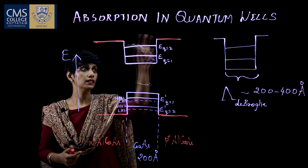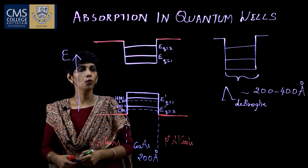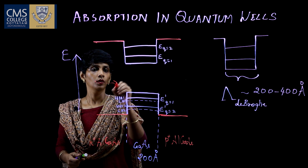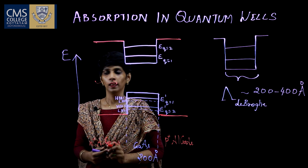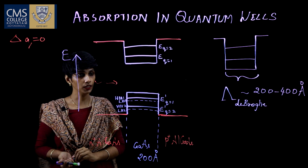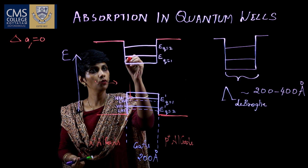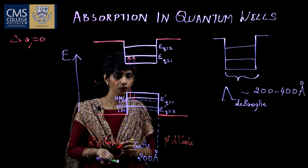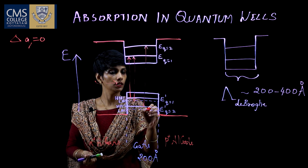This is a single quantum well. If we repeat the structure we get a multiple quantum well. When a photon falls on the system, absorption transitions take place. For an allowed transition to occur, delta q is equal to zero. So we have transitions from the heavy hole first energy level to the first conduction band energy level, and from light hole 1 to the first energy level. Similarly, we have transitions from the second energy level to the second energy level.